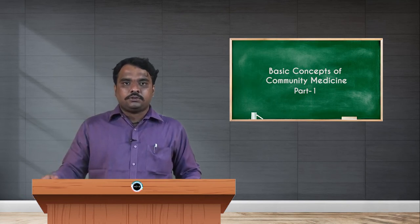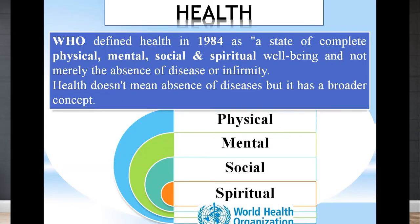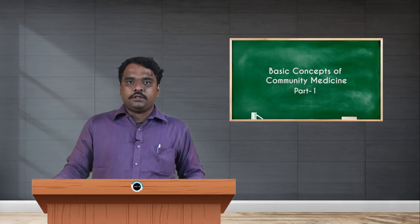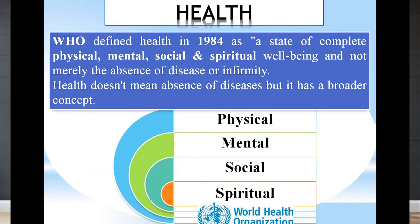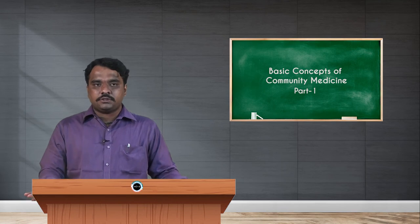According to WHO, health was defined in 1984 as a state of complete physical, mental, social, and spiritual well-being, and not merely the absence of disease or infirmity. When an individual has good health, they must maintain stable capacity at the physical, mental, social, and spiritual levels. Only when stability is maintained across all four aspects is a person considered healthy.